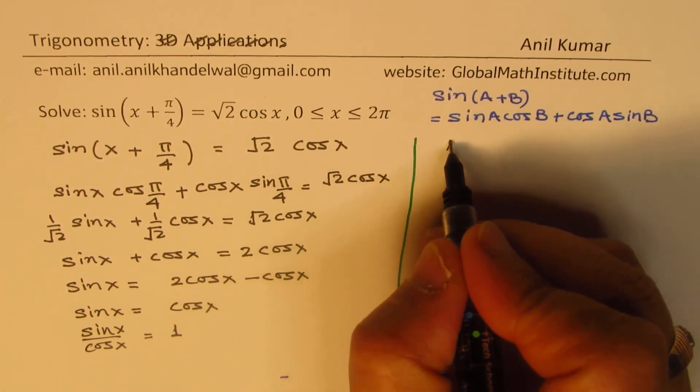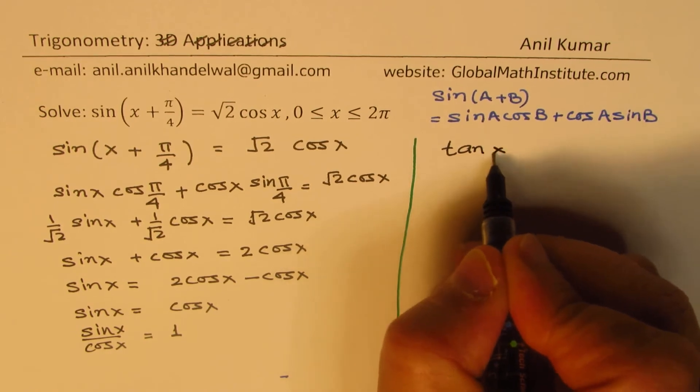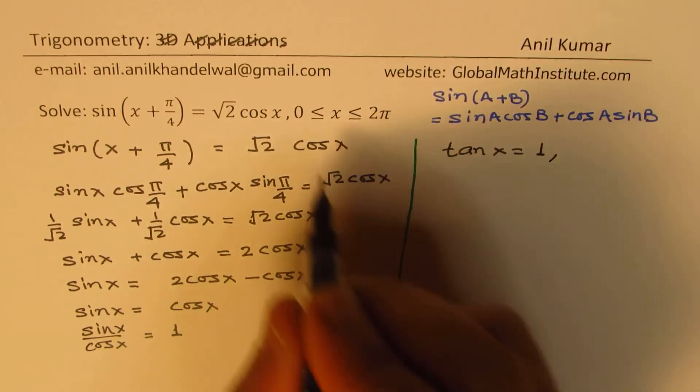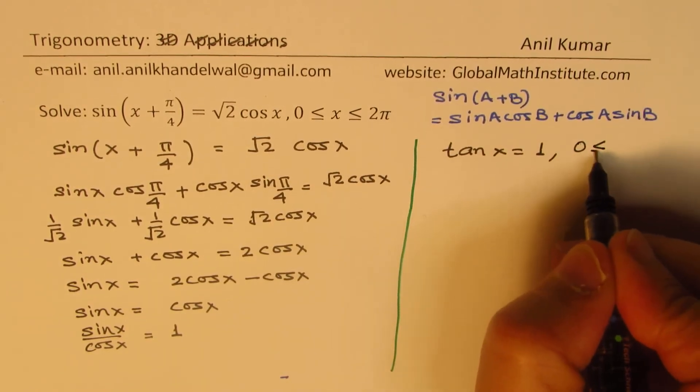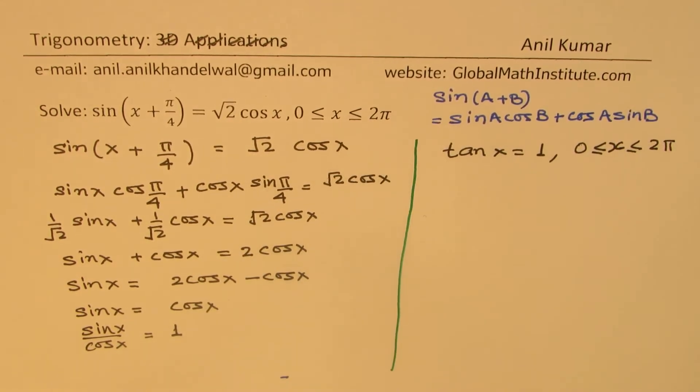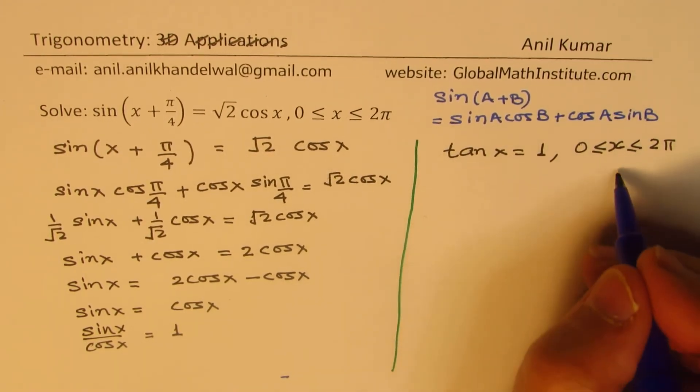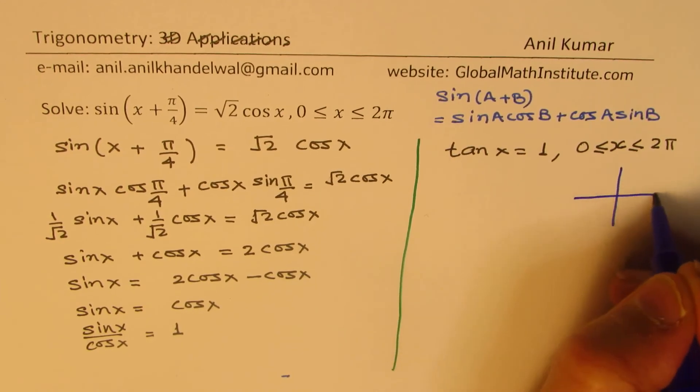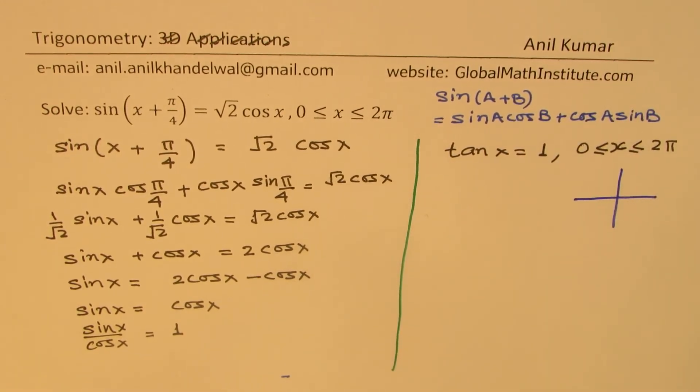We have tan x = 1. We are given that x is between 0 to 2π. Now, tan x is positive in two quadrants, so within this limit of 0 to 2π, we have two solutions for this equation.